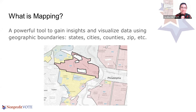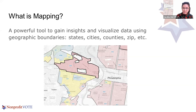So what is mapping? The mapping we'll be talking about today is really a potentially new way for you to look at data. It can be a tool to explore data, gain insights, and visualize it along geographic boundaries like state lines, city lines, counties, and zip codes. It helps us see things that would otherwise be hard to see just from a table.